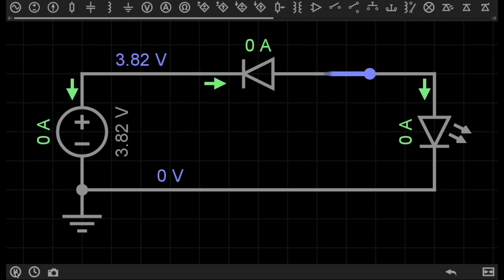No current is being allowed to flow through the circuit. This diode is stopping the current from flowing because it is now what you call reverse biased.